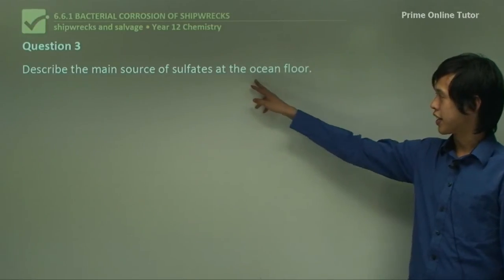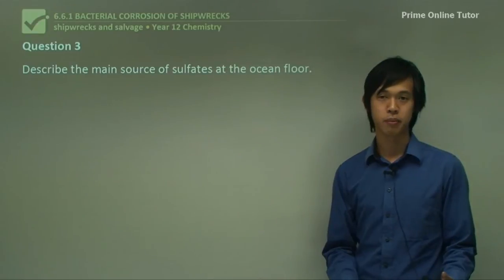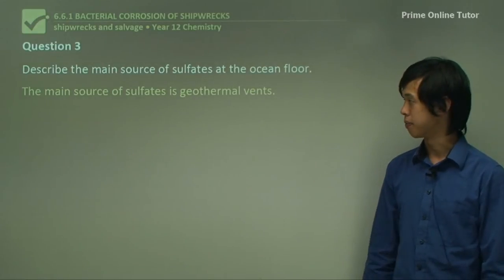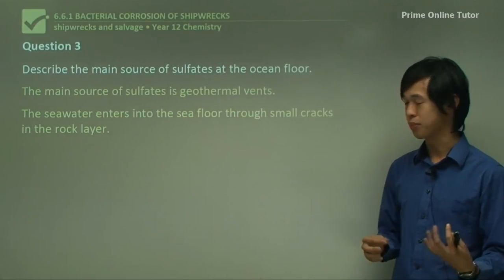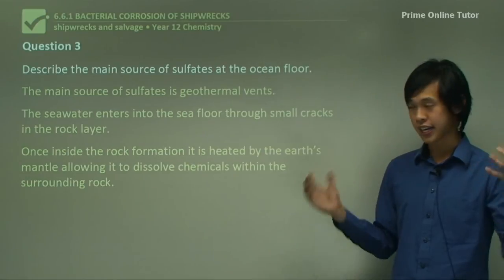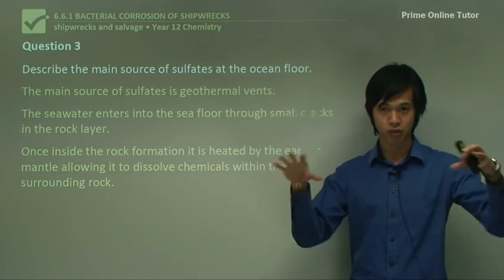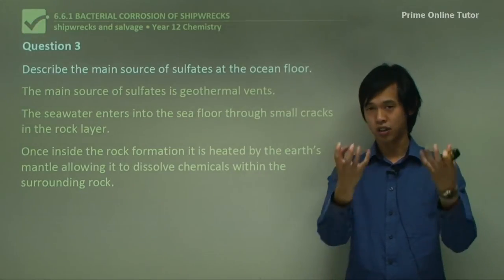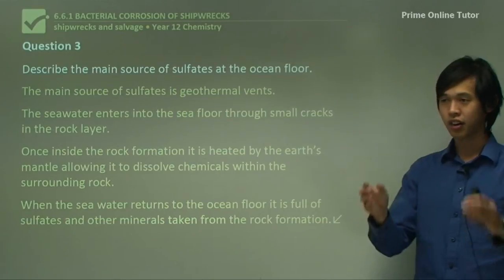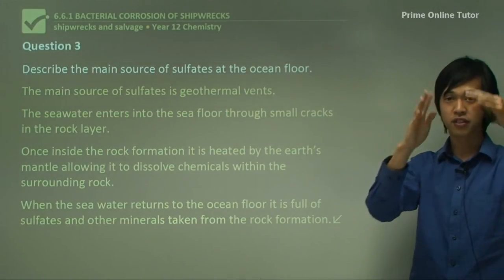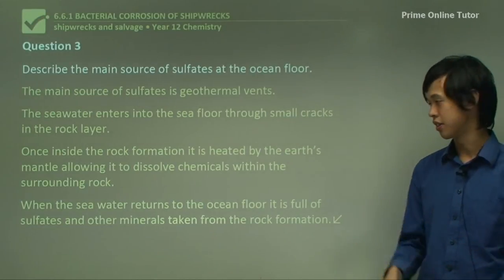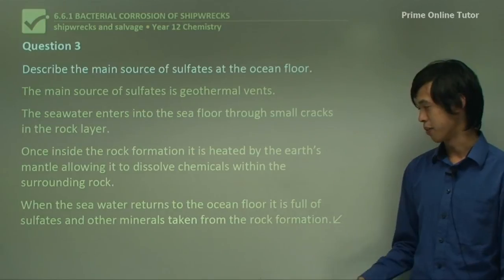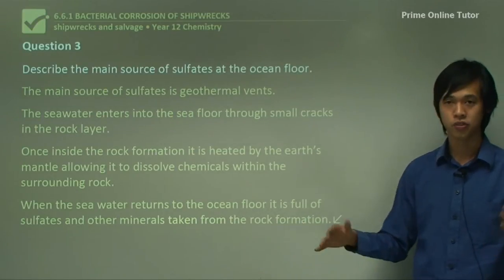Question three: describe the main source of sulfates at the ocean floor. At the bottom, where are they even getting sulfate from? If you look back at our earlier lessons on geothermal vents, that's where most of the sulfate comes from. Seawater enters the sea floor through small cracks, and once inside the rock it gets heated by the Earth's mantle, allowing it to dissolve chemicals from the rock. When the water leaves the rock and goes back into the ocean, it carries all these dissolved solids with it — including sulfate and other minerals taken from the rock formation.